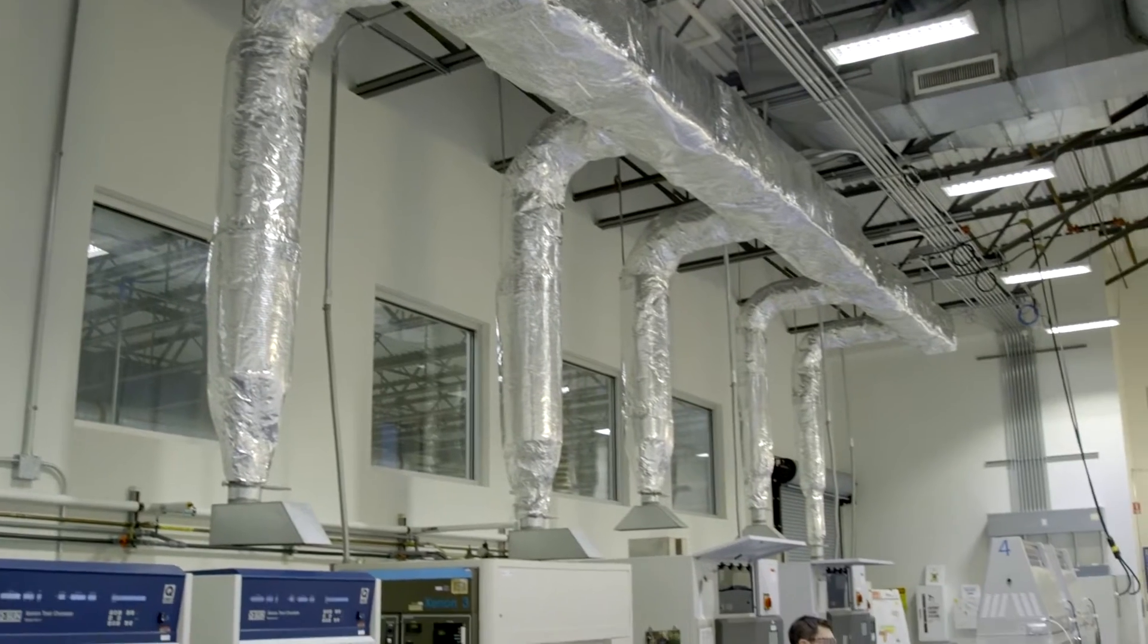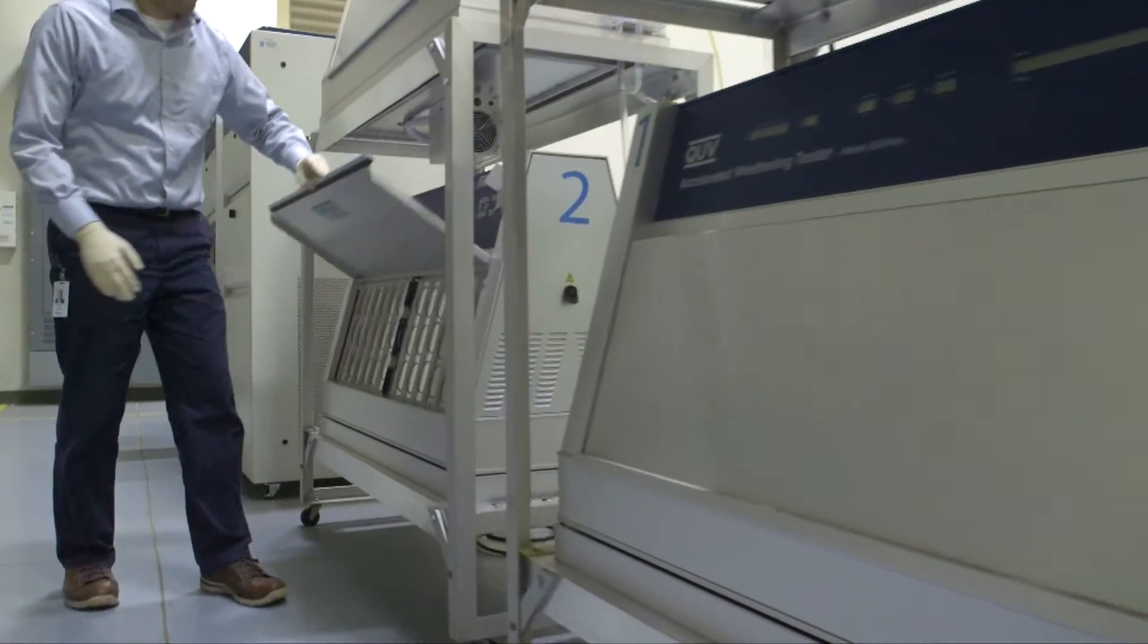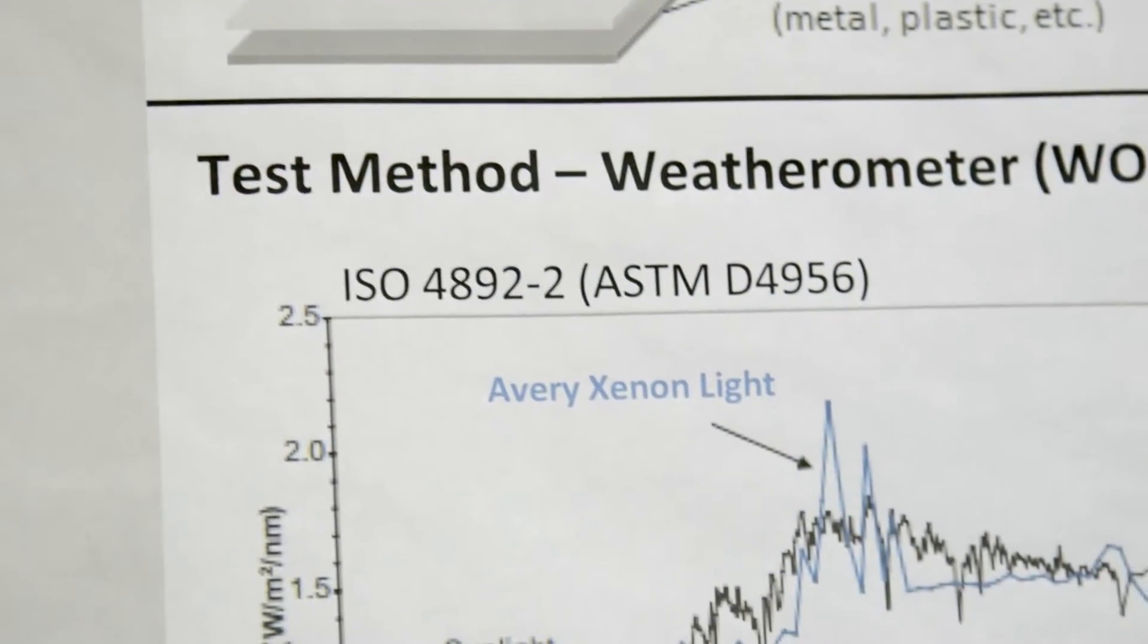at Avery Dennison is made up of various types of test chambers that include elements seen outside in real life, such as sunshine, moisture, and temperature.